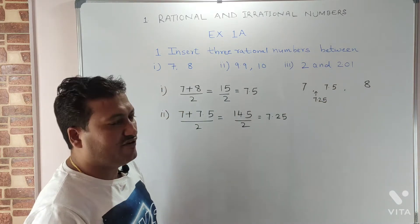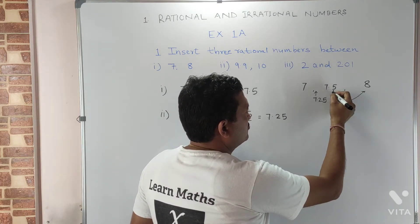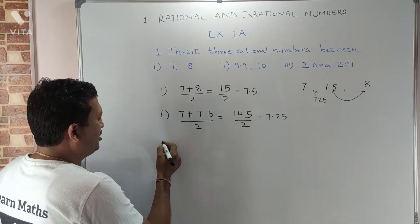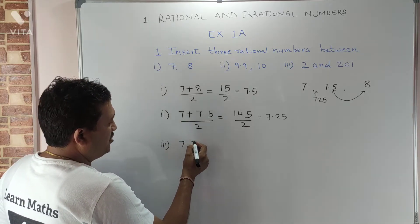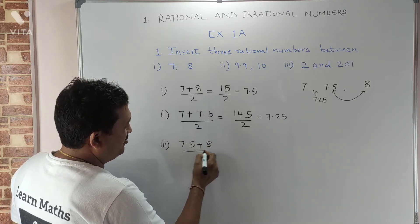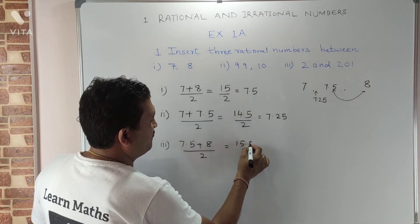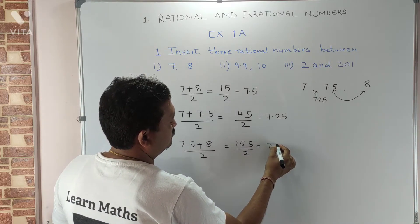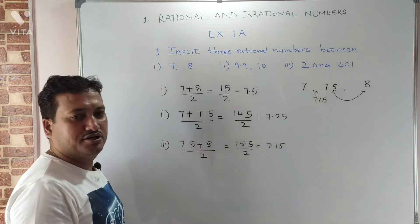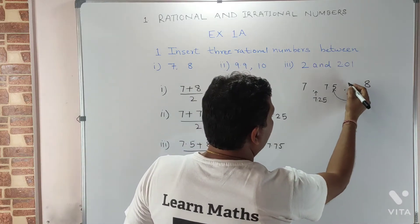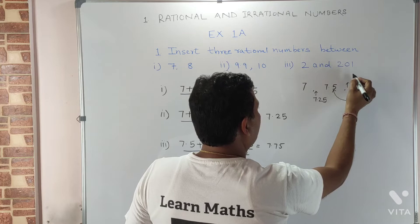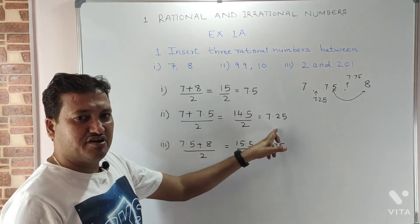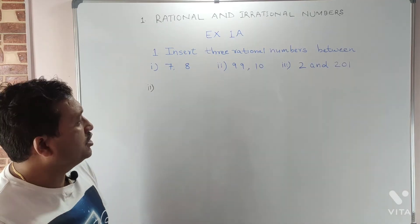Now we will find the number between seven point five and eight. We need to add seven point five with eight and divide by two. So the third rational number is seven point five plus eight divided by two, which equals fifteen point five divided by two, giving us seven point seven five. So the three rational numbers between seven and eight are seven point two five, seven point five, and seven point seven five.